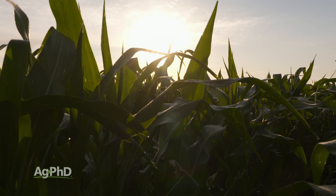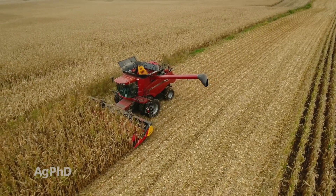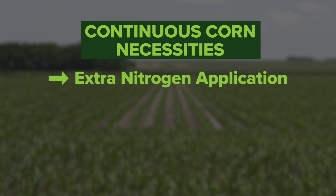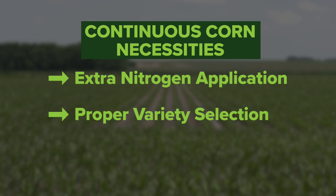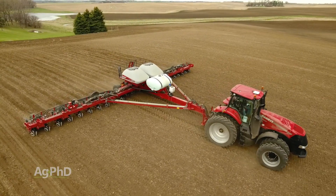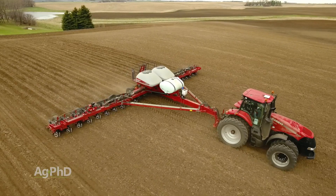When people say continuous corn doesn't work very well, keep in mind that some of the very best highest-yielding corn producers in history have been continuous corn farmers. It can work, but you've got to look hard at extra nitrogen especially for the first few years, you've got to look at variety selection to avoid problems with diseases like Goss's wilt, and you need to take a real hard look at your tillage program to make sure you can get seed planted just right. Follow those steps and continuous corn can work out fantastically well.